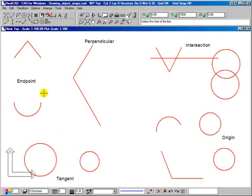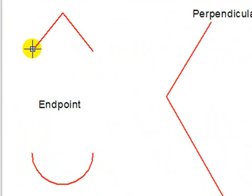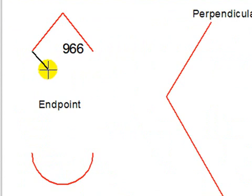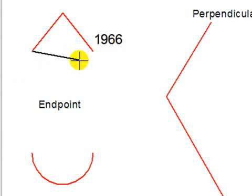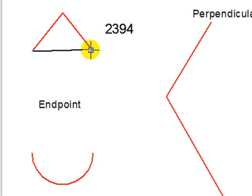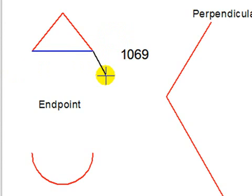We'll look at endpoints first. You can tell you get an endpoint by pointing to the end of an existing entity, such as a line here, and a small square appears on your crosshair. It's essential for accuracy purposes that the square appear. If you click and there is no square appearing, you will not be accurate. If I click now, that line is attached precisely to the end of the red line. I come across here to the end of this other red line, another square appears, I click, and I have snapped to the end of that red line.